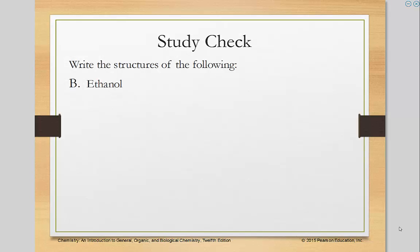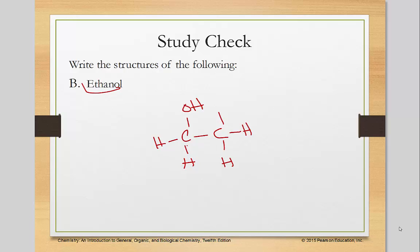Ethanol has two carbons, and there's an OH group on it. Notice that they did not bother telling you which carbon, because there are only two carbons here — depending on which direction you count, it will always be on the first carbon. In skeletal format it would look like this — a carbon here and a carbon here with the OH.